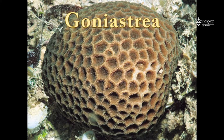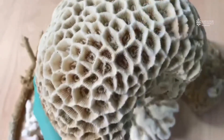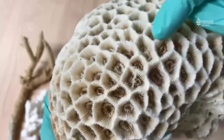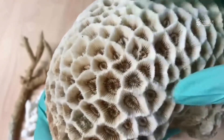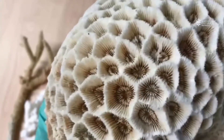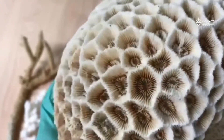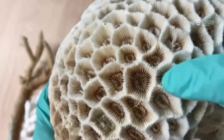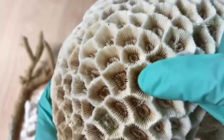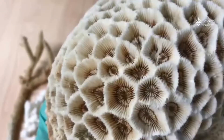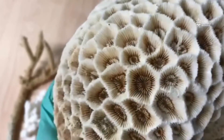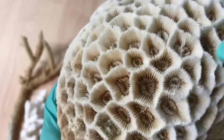The next genus to learn is Goniastrea. The corallites are about 1 cm in diameter, the walls are shared, and there's usually only one corallite mouth within each set of walls. If you look closely, the septa are very fine and regular, with a lot of septa running into each corallite. Each corallite also has a central ring around the mouth, which we call a paliform crown.